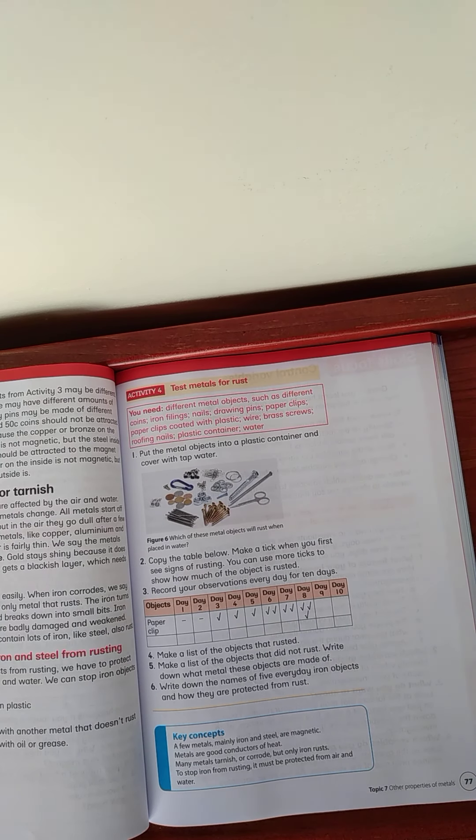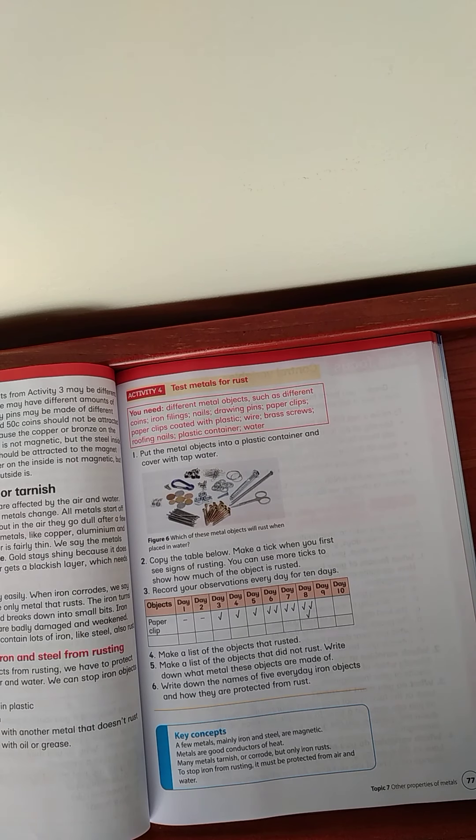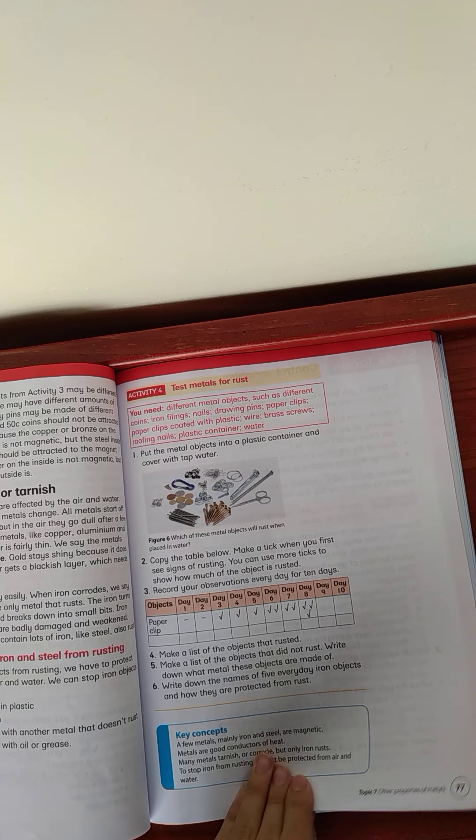We will be having a discussion about it for the kids that maybe are allowed to. If nobody can do it, we will be doing this in class as well because we have the materials at school. So, these experiment types of things we will be doing at school if you are not able to do them now. So, then just do four for me. Make a list of the objects that rusted. Make a list of the objects that did not rust. And write down the names of five everyday iron objects and how they are protected from rust.